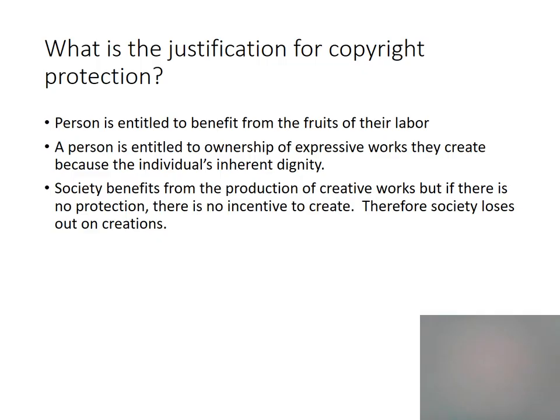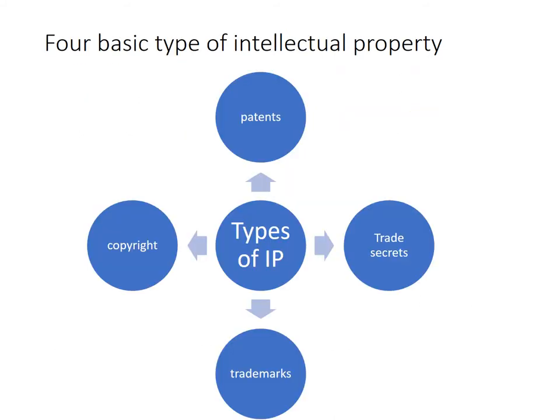Your textbook does an excellent job of describing several justifications for copyright — namely the economic basis, incentive to create, property theories, and philosophical justifications such as personality theories and natural rights theories. It's important to remember that intellectual property protects creations of the human mind. There are four basic types of intellectual property. This semester you're going to learn about all four IP types, with an emphasis on copyright, as it is the most applicable to technical writing and communication.